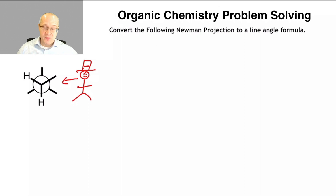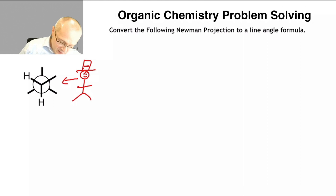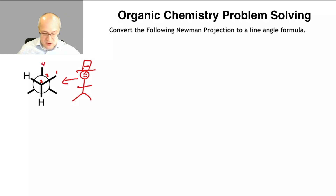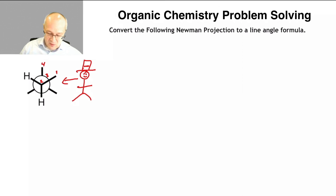The first thing I would do is count my carbons, because that's where a lot of students make mistakes — they just don't count their carbons. So I have one here, two, the circle's three, and four. So my longest chain here is four carbons.